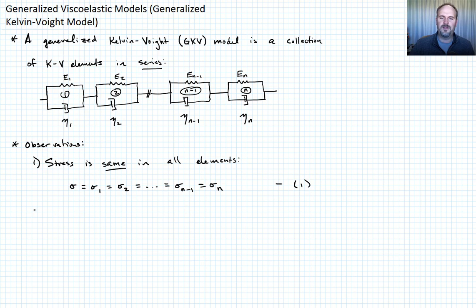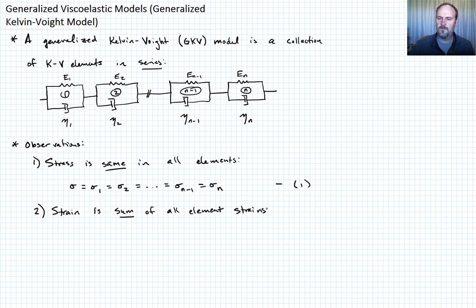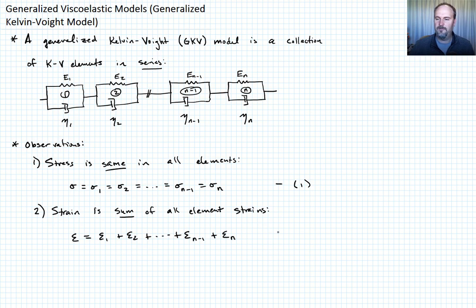Observation two: how about the strain? The strains are going to sum. So the strain in the generalized Kelvin-Voigt element is the sum of all the element strains. That means epsilon equals epsilon_1 plus epsilon_2 plus ... plus epsilon_{n-1} plus epsilon_n. Call that equation two.